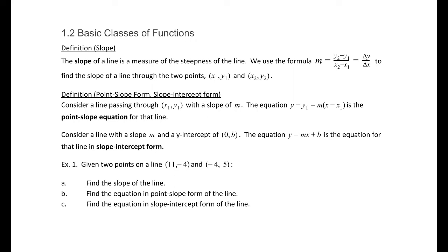The point-slope form is this equation: y minus y1 equals m times (x minus x1). That tells us the slope and a point that the line passes through — that is of great importance. And then the slope-intercept form is y equals mx plus b, where b is the y-intercept and m is our slope.